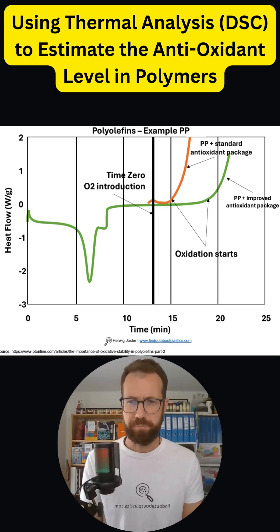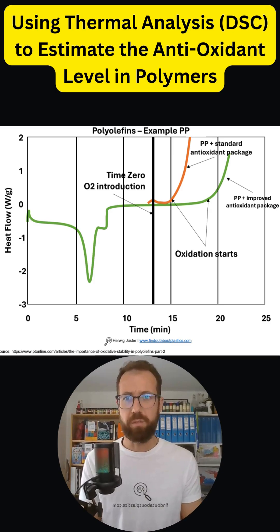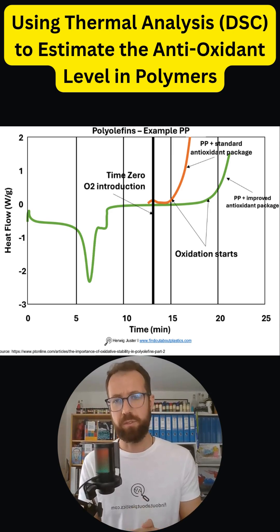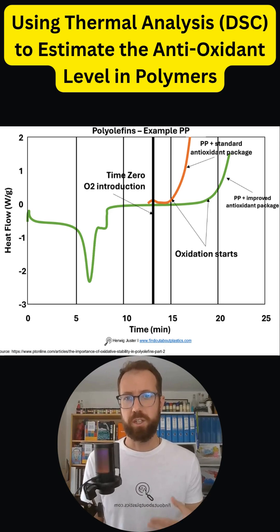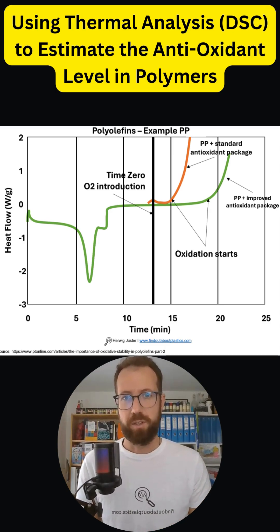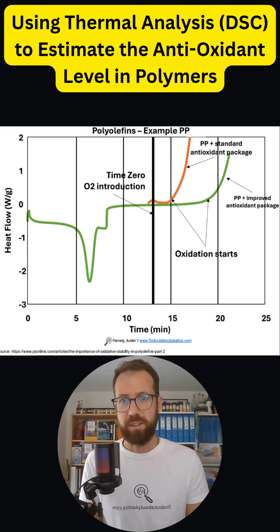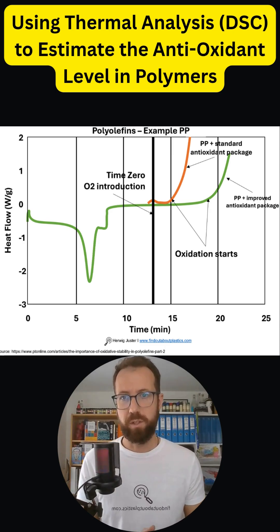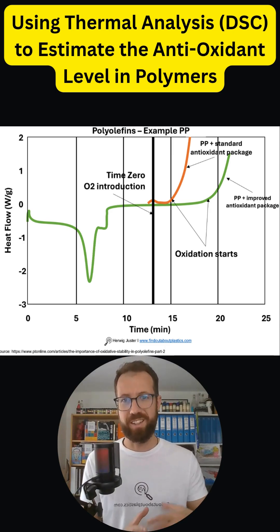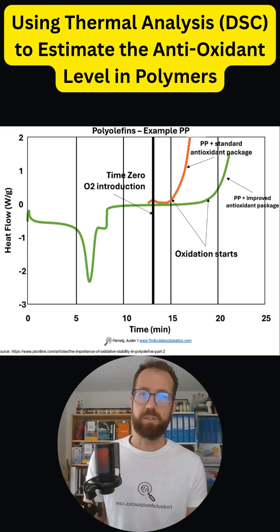You can see that when we switch the measurement atmosphere from nitrogen to oxygen, the oxidation starts. For the standard antioxidant package, it takes around two minutes to two minutes thirty before oxidation starts and the antioxidant is used up.